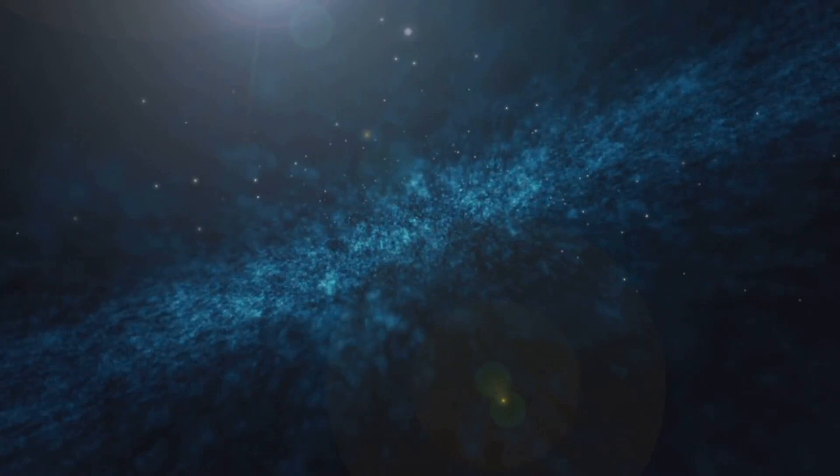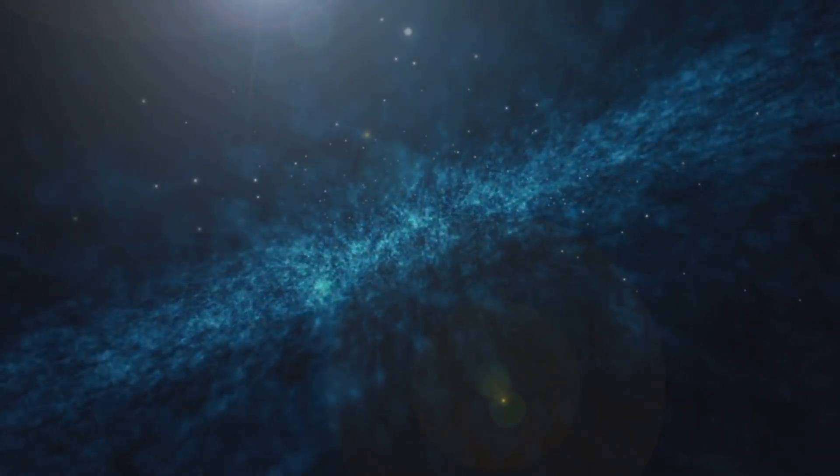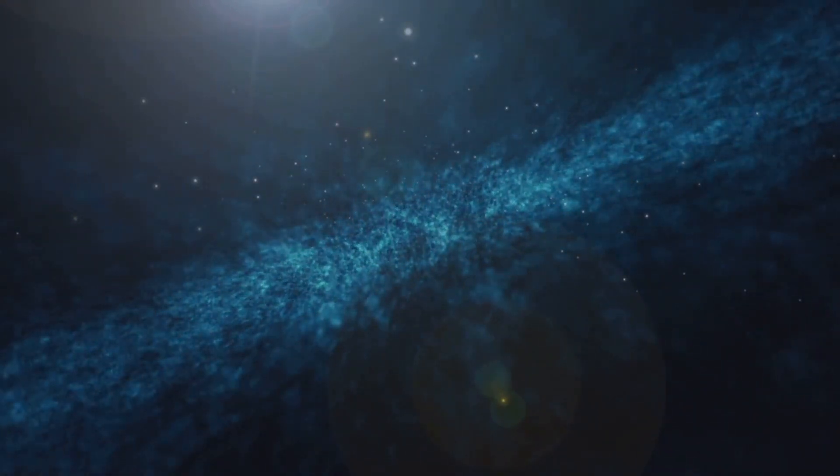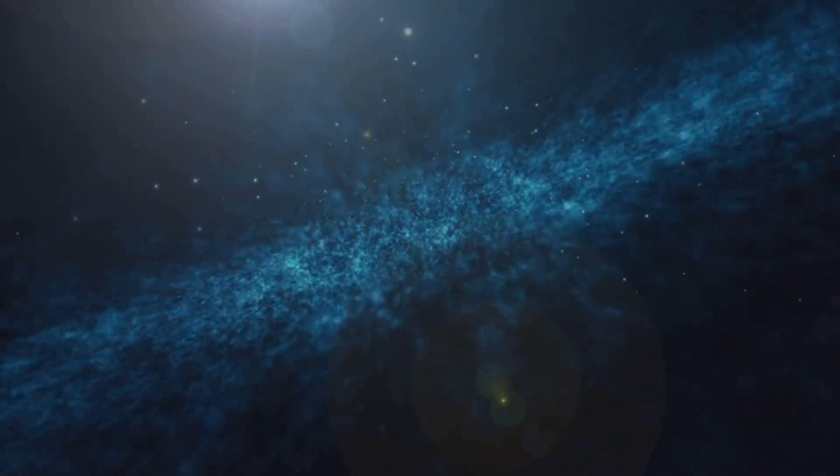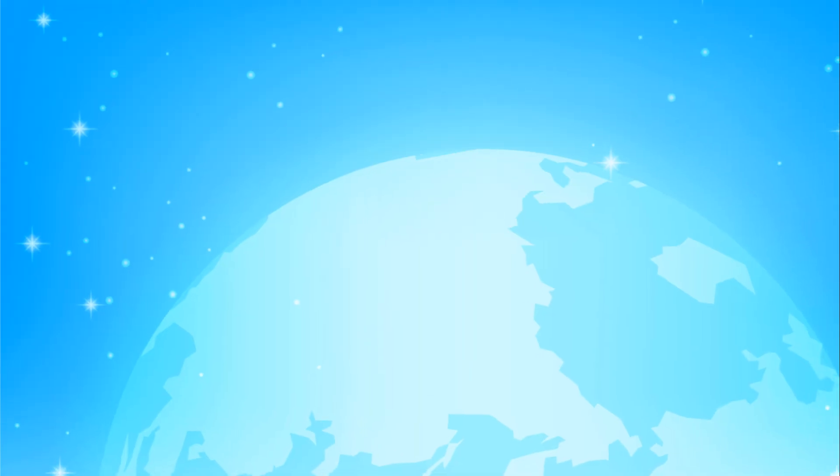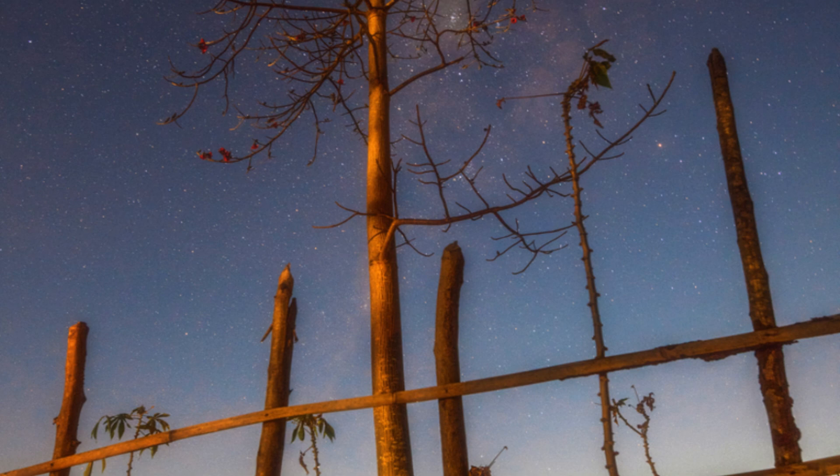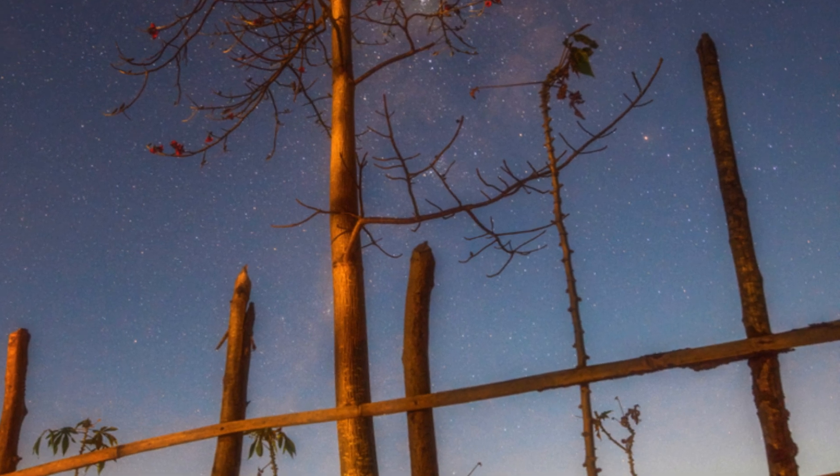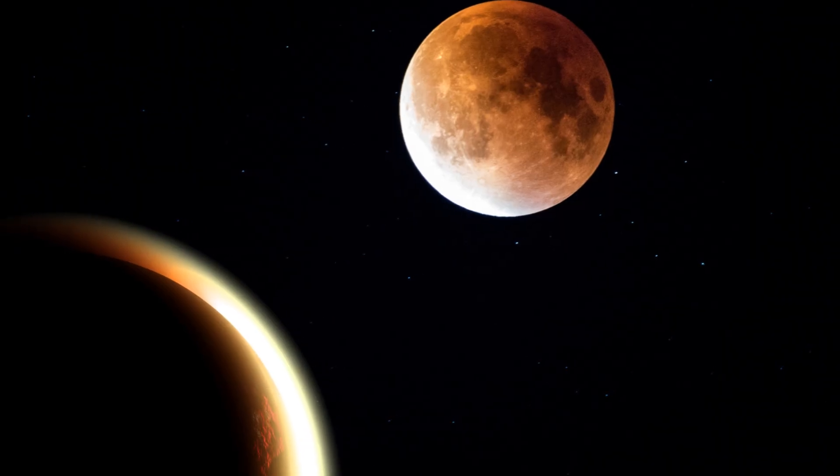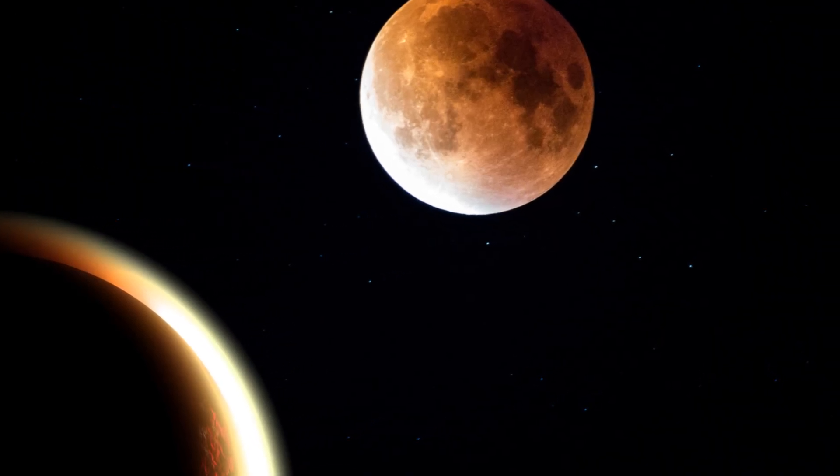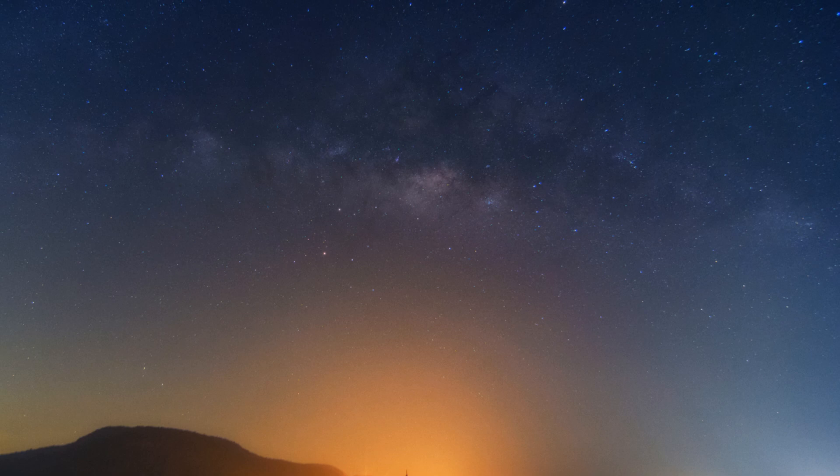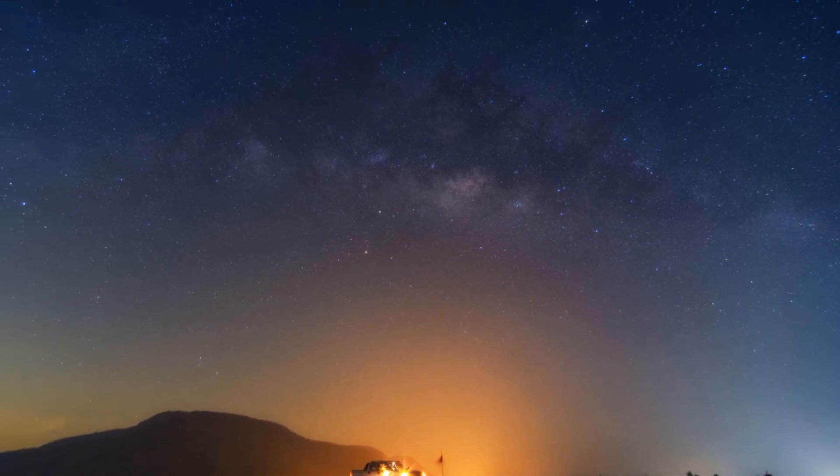The observable universe, the part of the universe we can in theory see, is estimated to be about 93 billion light years in diameter. That's a mind-bogglingly huge number. To put it in perspective, if you were to travel at the speed of light, it would take you 93 billion years to cross from one end to the other. And within that immense expanse, it's filled with roughly 2 trillion galaxies, each brimming with billions of stars.